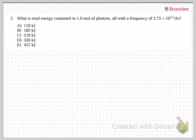The second problem is: what is the total energy contained in 1.0 mol of photons, all with a frequency of 2.75 × 10^14 Hz? The frequency in our notation uses the symbol nu. The frequency is given, and the question is mainly concerned about how much you understand the energy equation for the photon.